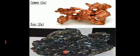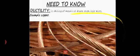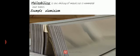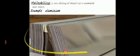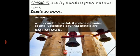Some common terminologies used when studying metal properties: ductility is the ability of a metal to be drawn into wires — for example, copper wires. Malleability is the ability of a metal to be hammered into sheets — for example, aluminium foil. Sonority is the ability of a metal to produce a ringing sound when tapped. Scientists say that metals are sonorous.